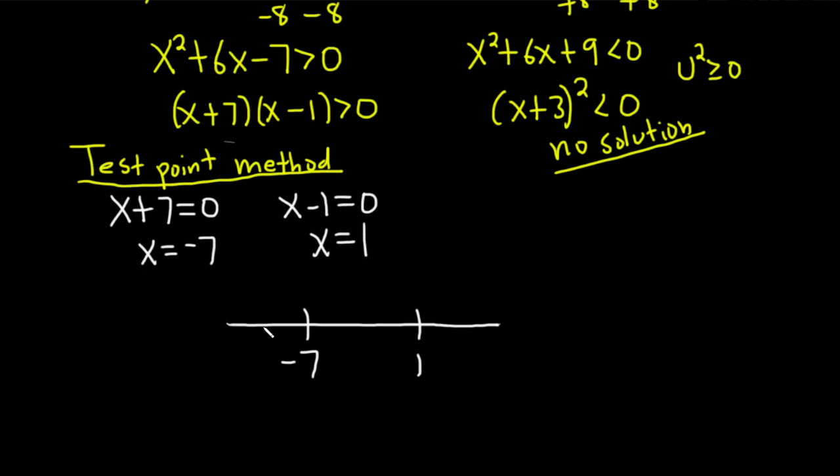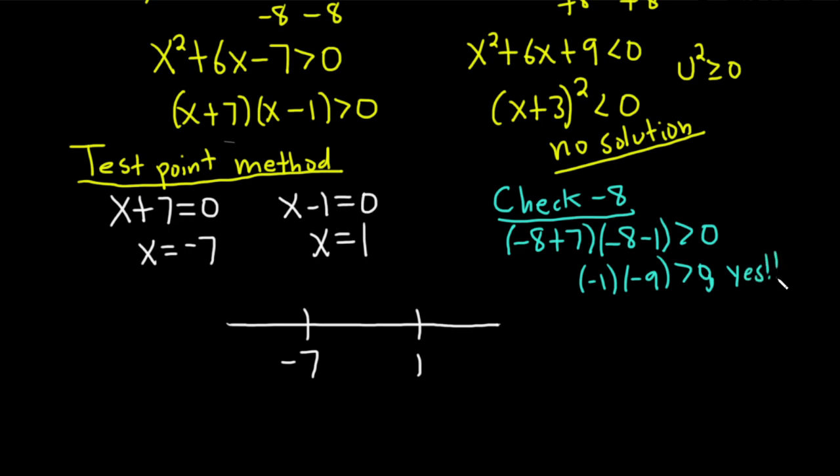Let's pick a number smaller than negative 7. How about negative 8? So check negative 8. So you take the negative 8 and you plug it into your inequality. So negative 8 plus 7, then negative 8 minus 1. And you want to see if that's greater than 0. So it's going to be negative 1 times negative 9. And that's certainly greater than 0. So yes. So that means we shade here. So we're going to shade all of this.